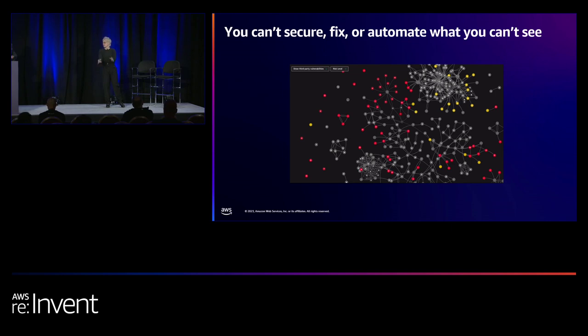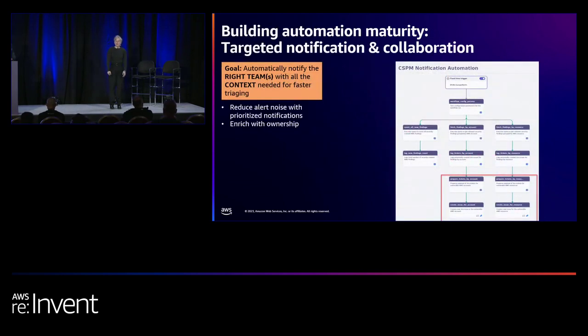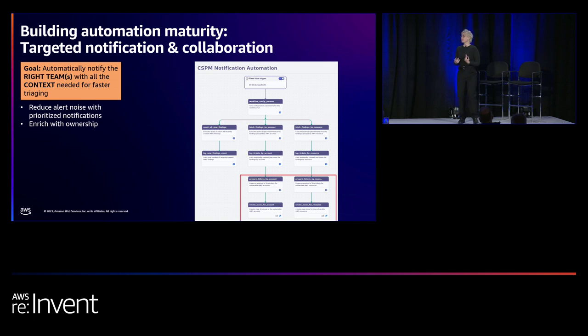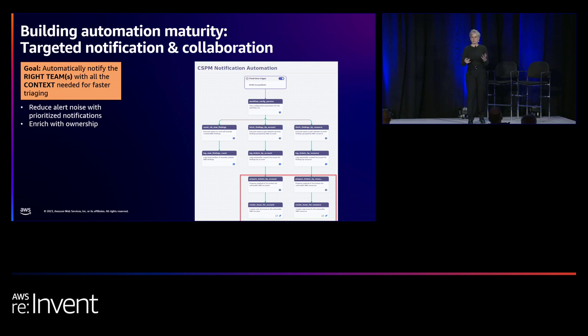The demo worked. To wrap up everything — why do we need observability when talking about automation, accelerating, secure and reliable AWS deployments? You can secure, fix, and definitely not automate things that you can't see. And with Dynatrace, you will be able to see them. So Susan, let's talk about some automation. Now let's do something about it.